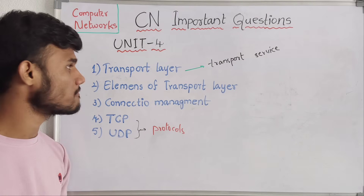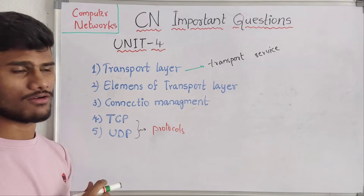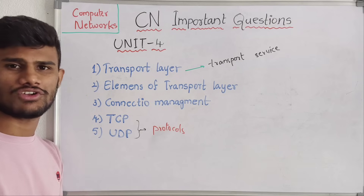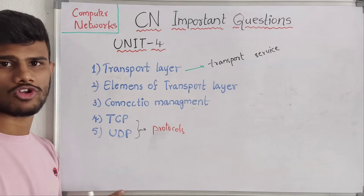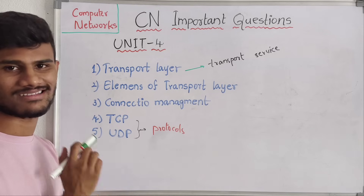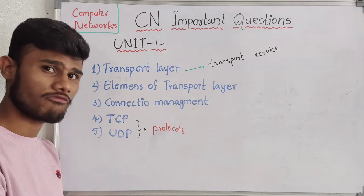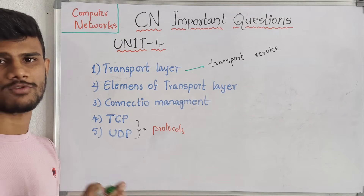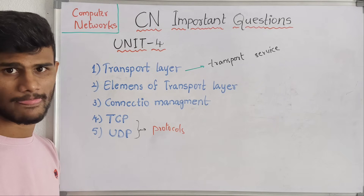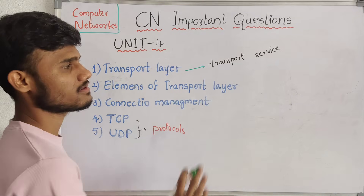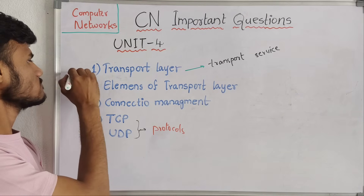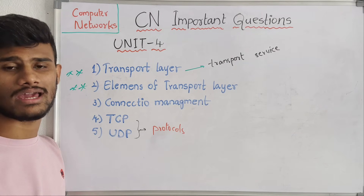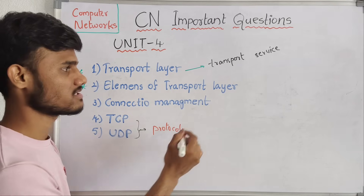Now coming to our fourth unit. This fourth unit is completely about the transport layer. In the transport layer we have many protocols — two main protocols: TCP and UDP. This is one of the easiest units in CN subject. We have only four main topics. TCP and UDP are considered a single topic because they are the protocols of the transport layer. The first topic is transport service — what is the service behind transportation of data from one layer to another.